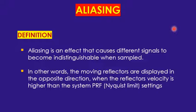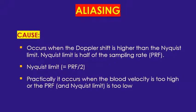So the cause: aliasing occurs when the Doppler shift is higher than the Nyquist limit. The Nyquist limit is PRF divided by 2 — the PRF of the Doppler pulses, not the B-mode pulsations. The machine has specific pulsations for Doppler; B-mode pulses are two or maximum three waves per pulse, but Doppler has many waves — up to 20 in one pulse. Practically, aliasing occurs when the blood velocity is too high to be handled by the Nyquist limit.